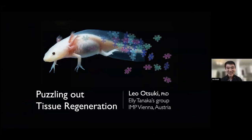Thank you, Debbie and Alex for having me. We're going to switch from sharks to salamanders and from brain to limb, so I hope you can keep up there. I shortened my title to make it a bit simpler. Today what I'd like to do is use the analogy of a jigsaw puzzle to convey some molecular insights we're getting into this really exciting process of limb regeneration.